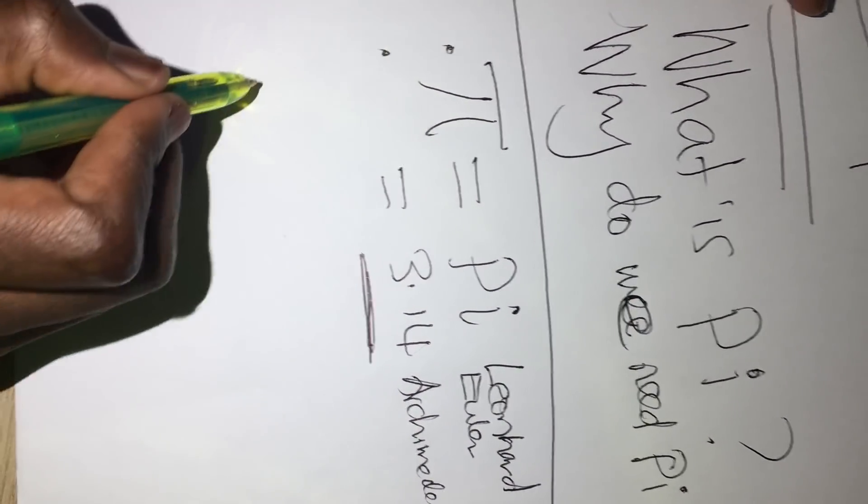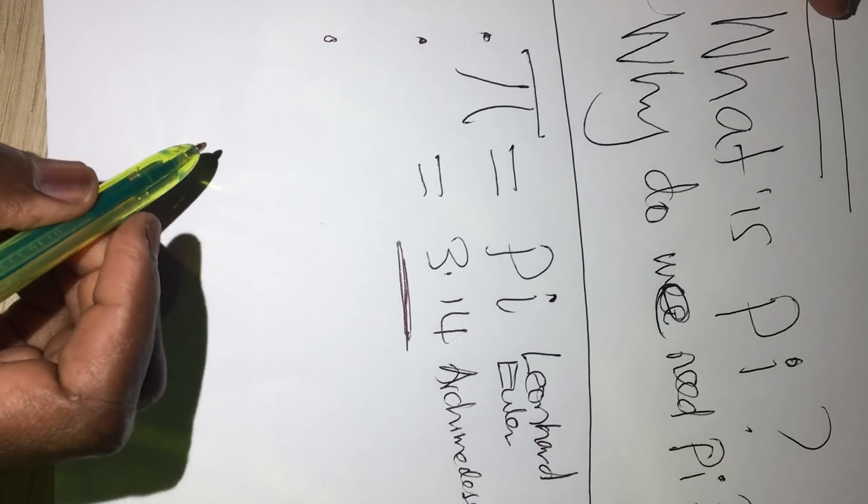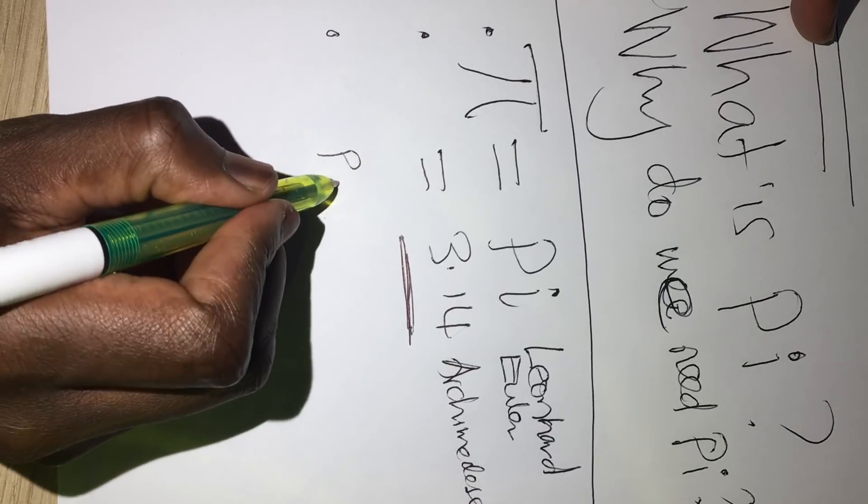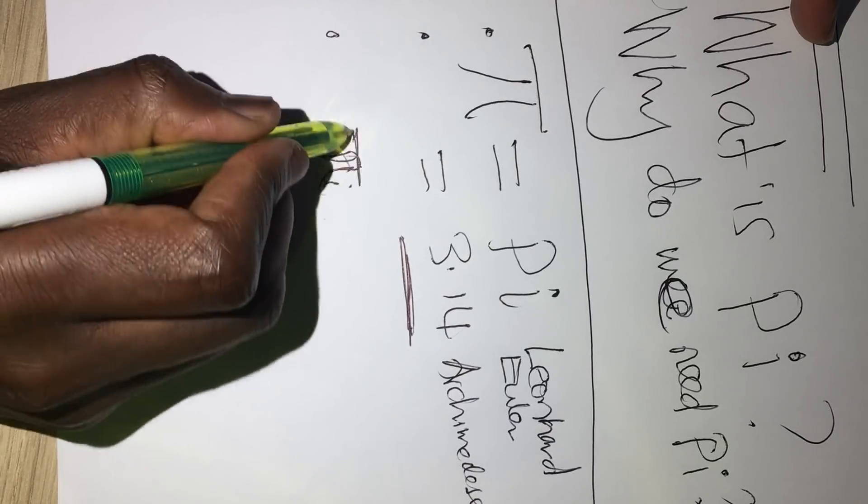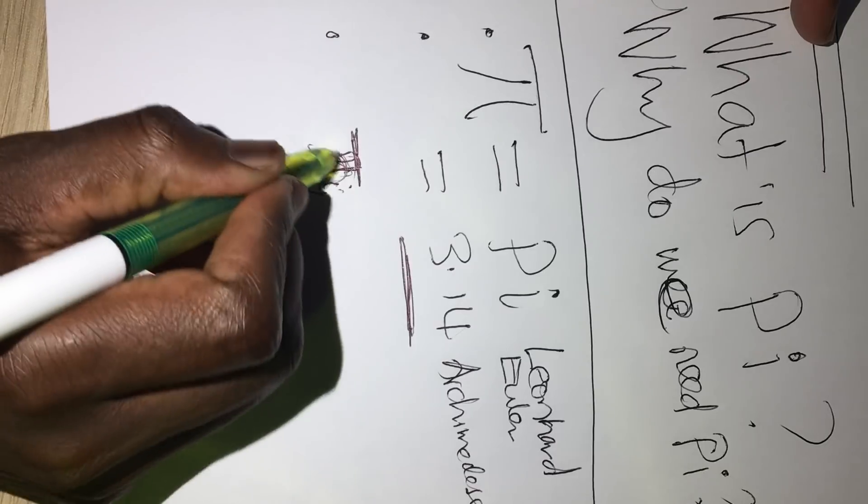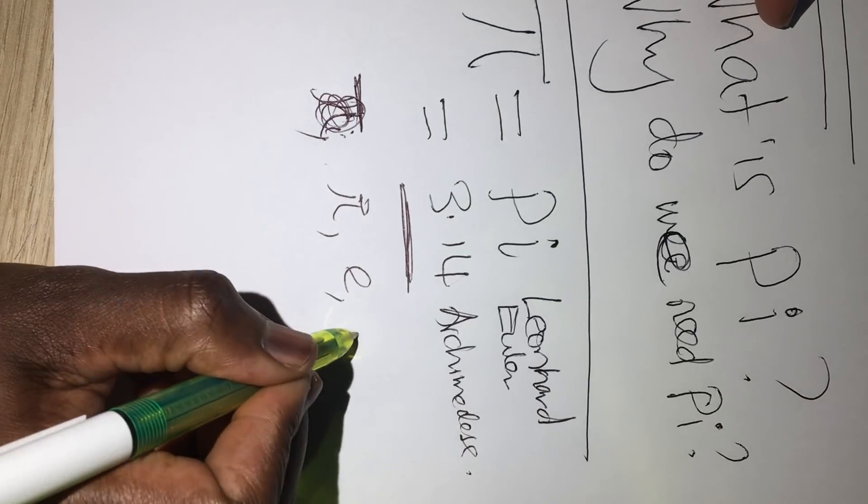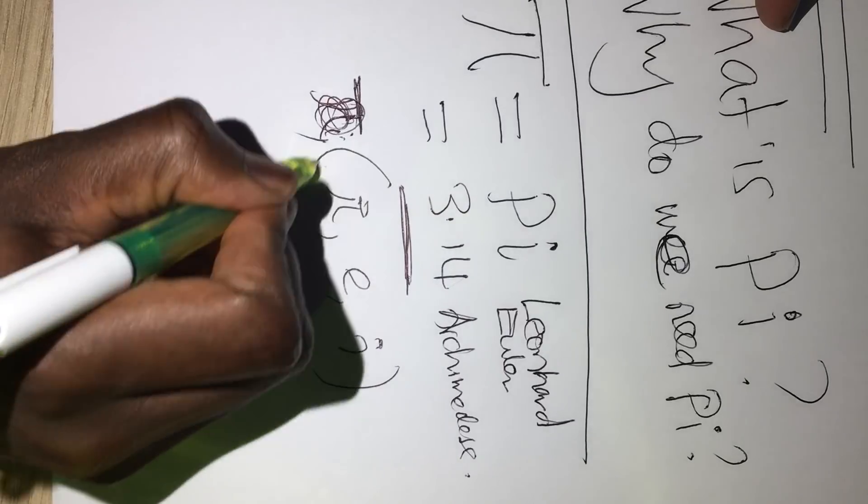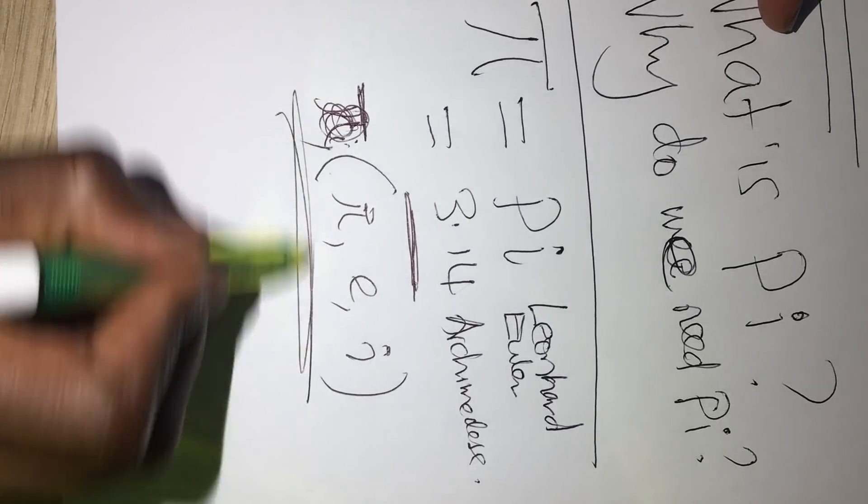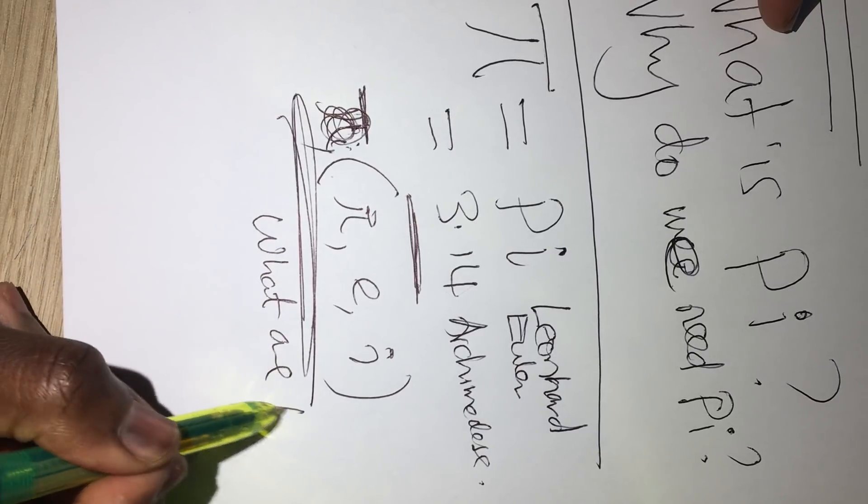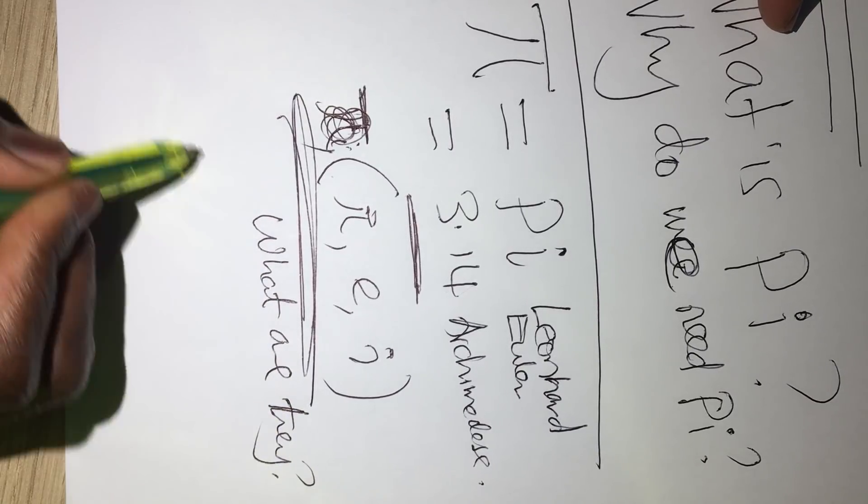And we know that Pi is one of the constants. For example, we have Pi, and let me say Pi, E, and we have i as well. What are these? What are they?